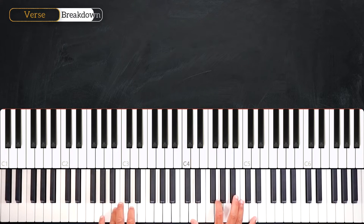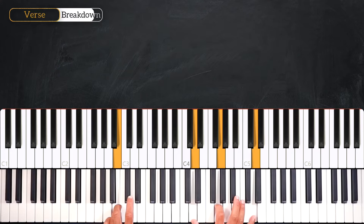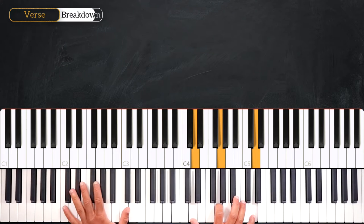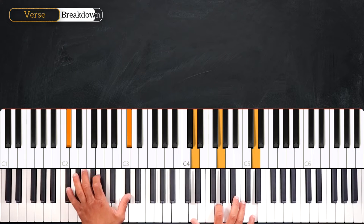So from here we play 1, 2, 3, 4. On the 3rd beat we're going to repeat the D and the G. 1, 2, 3, 4. And right after the 4th beat we'll play an octave C, C sharp, D.